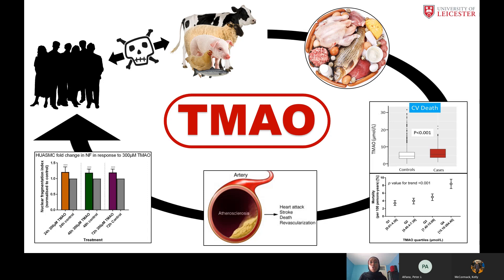Now the question is: what effect does TMAO have in the body, and how does it play a role in these extreme outcomes? Helping to answer that question is where my research comes into the picture. TMAO is a waste product, so the body tries to remove it by secreting it into the bloodstream to then be filtered out by the kidneys and ultimately excreted in urine.